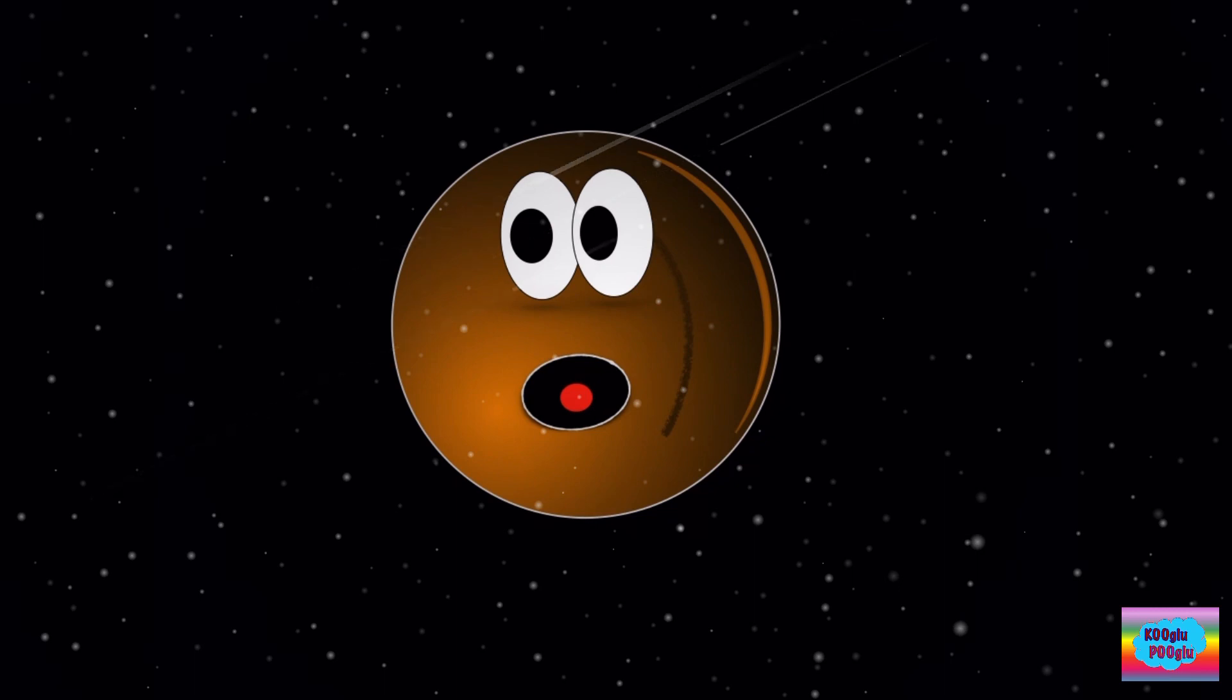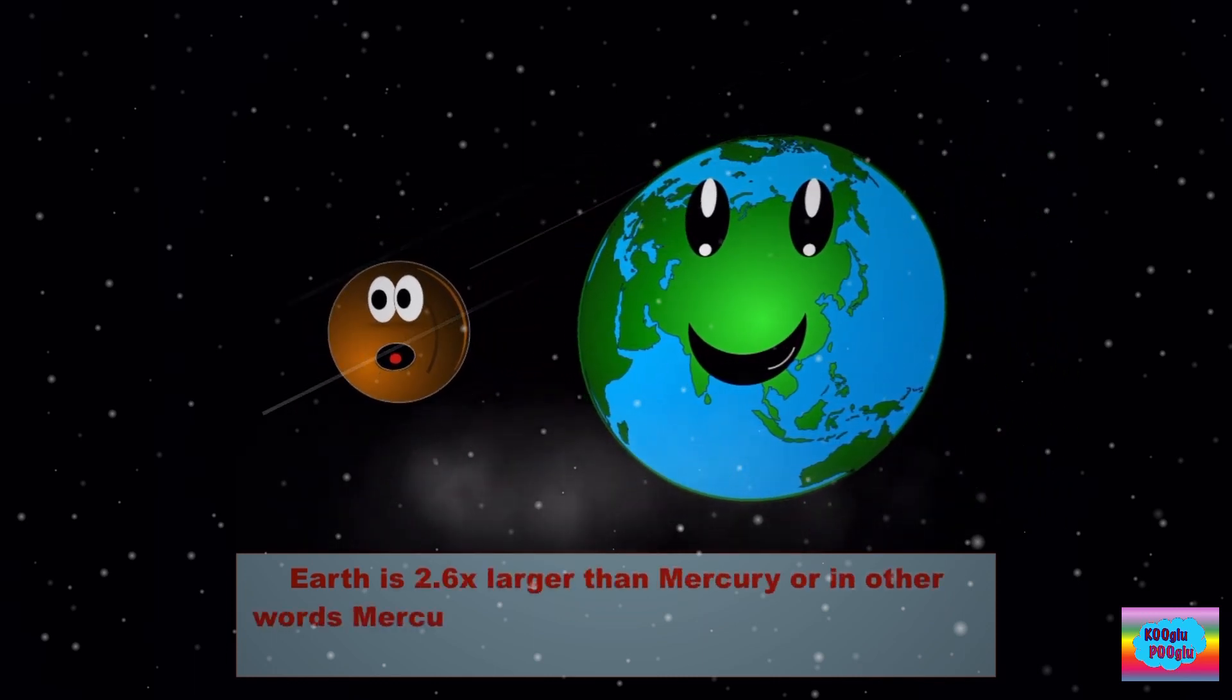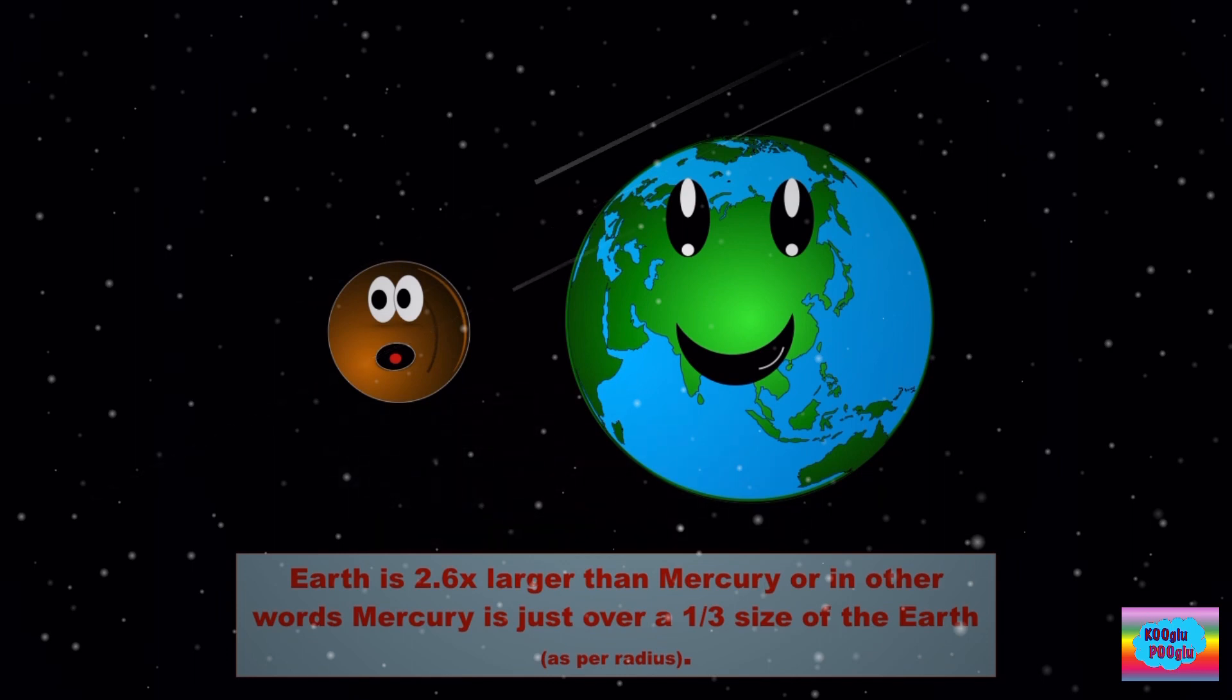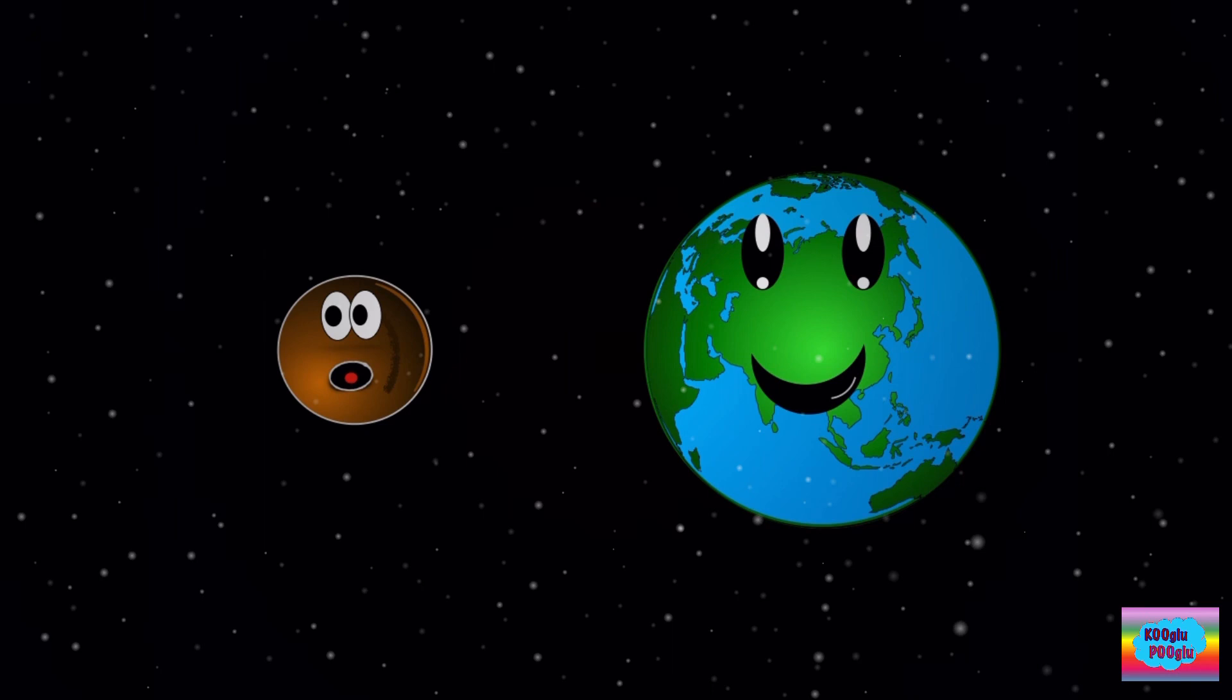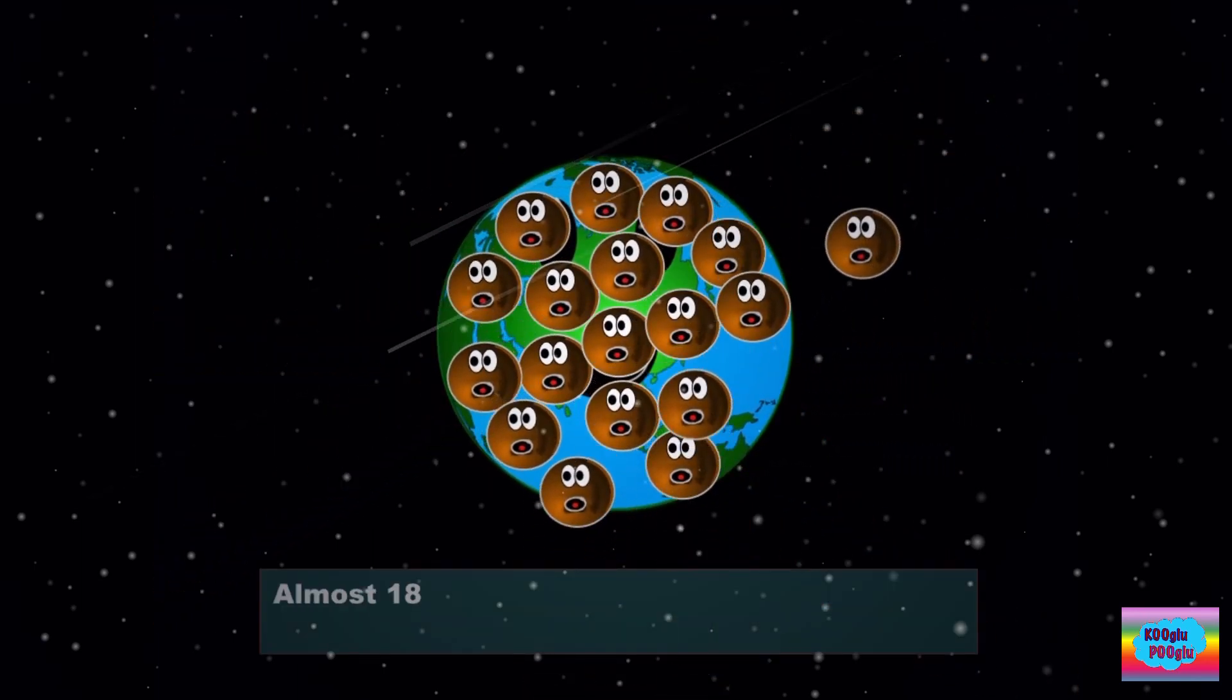Do you know how big is the Earth compared to me? Let's check it out! The Earth is 2.6 times larger than Mercury, or in other words, Mercury is just over one-third of Earth. But if you compare my size with Earth as per volume, almost 18 times of Mercury can fit in Earth. That's a lot!